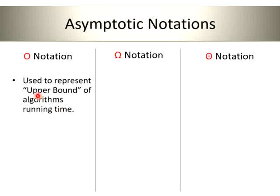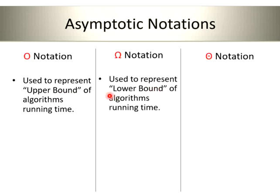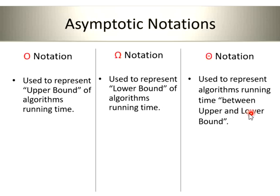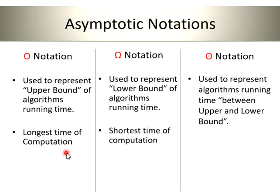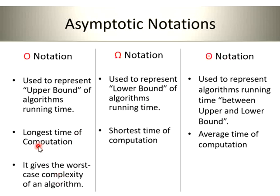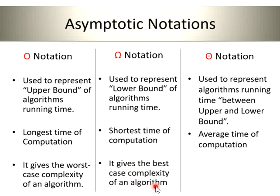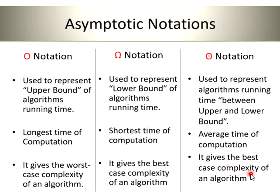Big O notation is used to represent the upper bound of the algorithm. Omega notation is for the lower bound, and Theta notation is for the average — that is, in between the upper and lower bound. The longest time computation is represented by Big O notation. If I want to represent the shortest time computation, I will use the Omega notation, and for average time I will use the Theta notation. Therefore, Big O gives the worst case complexity, Omega gives the best case complexity, and Theta gives the average case complexity of an algorithm.